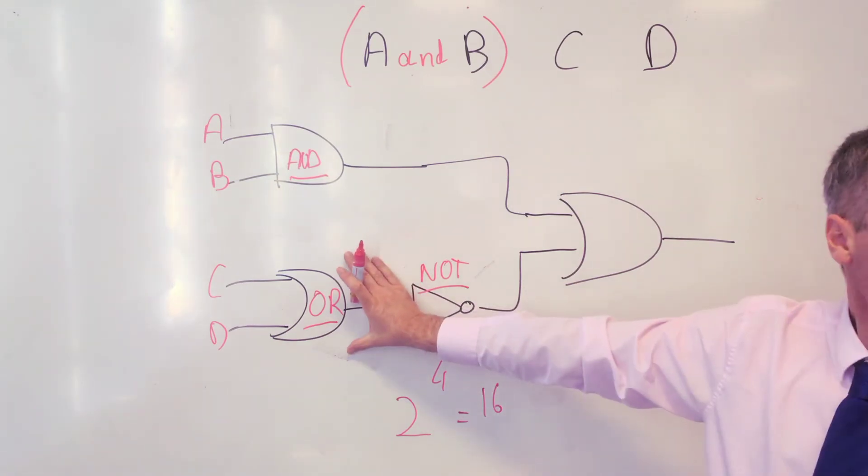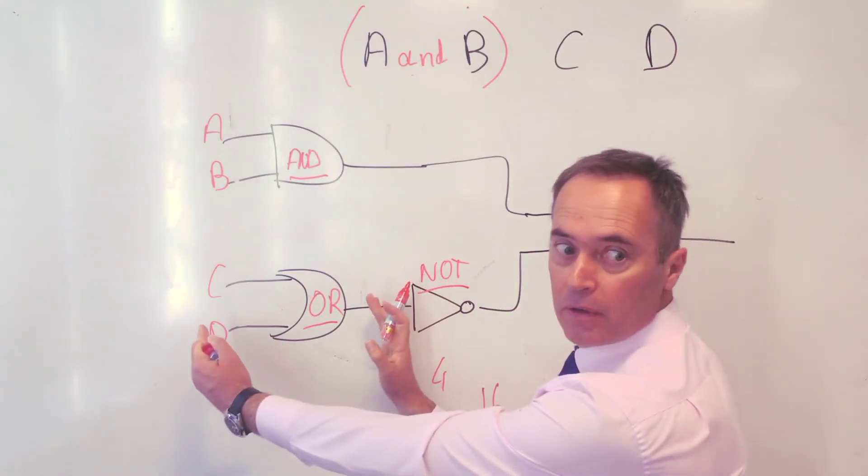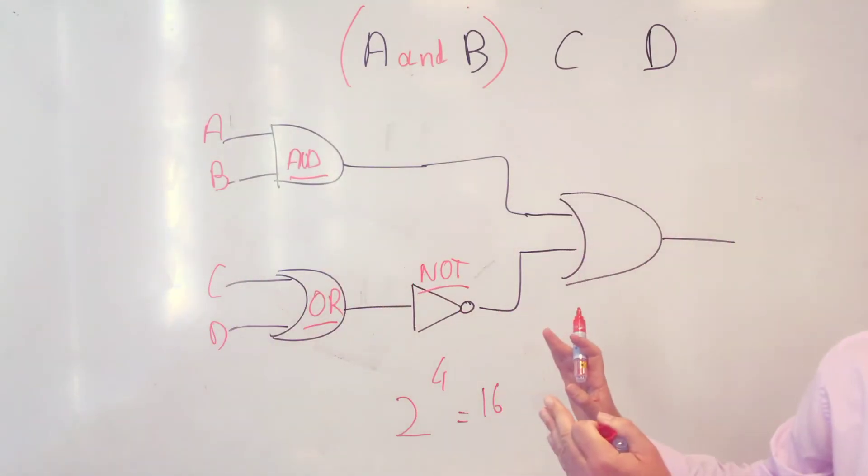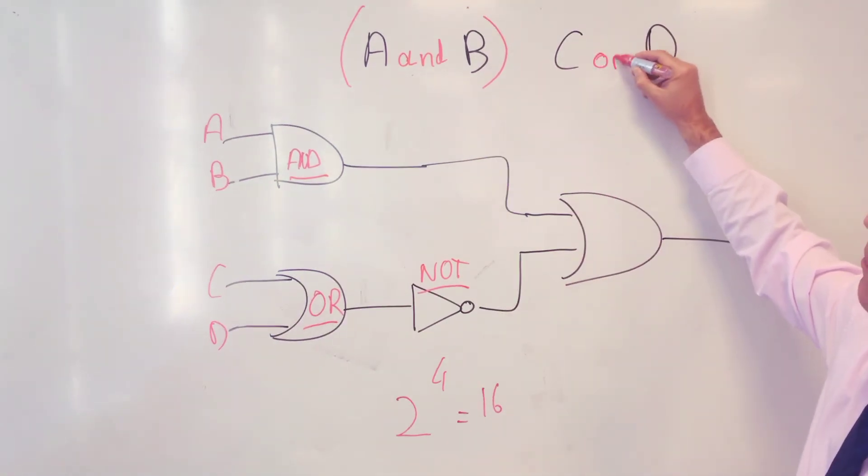What's happening down here? This part of the logic circuit. What's going on here? One or the other. So it's an OR. And what do I put around this? Brackets. Absolutely.